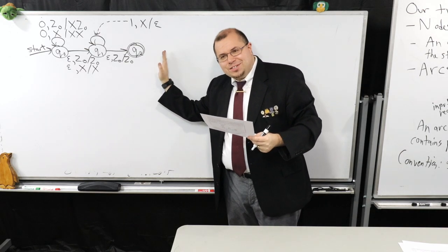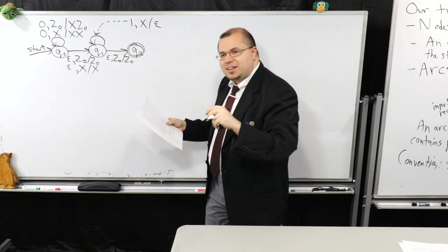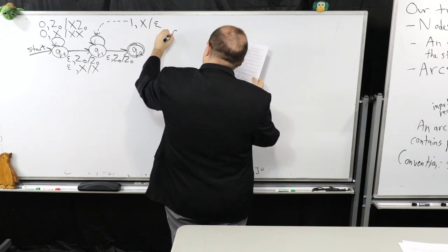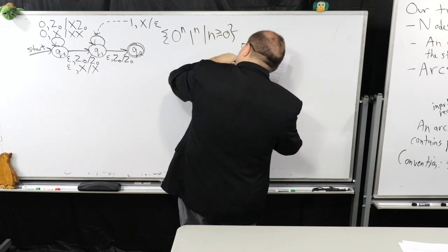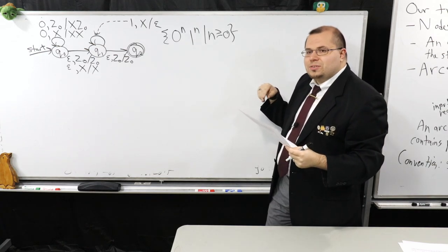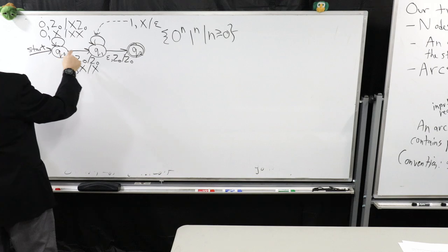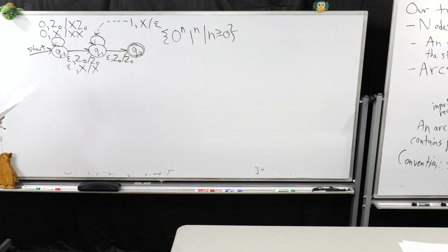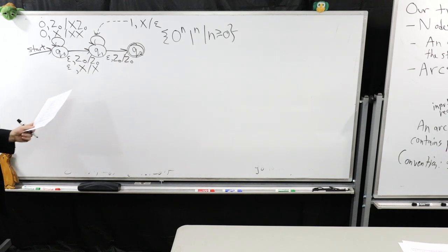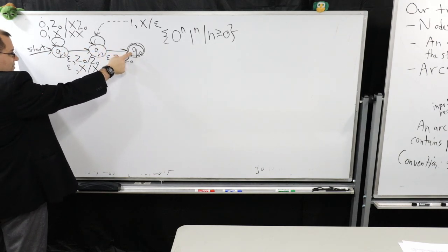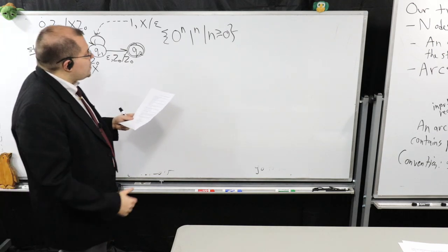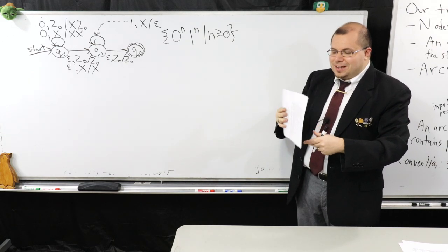This PDA recognizes the language zero-to-the-n, one-to-the-n, where n is greater than or equal to zero. If you need to convince yourself, remember it could be the case that there are no zeros or ones. We need these epsilon moves to get from Q0 to Q1, then from Q1 to Q2, so the empty string is accepted. The epsilon moves ensure that when we're done reading zeros — or if we don't read any — we can still reach the final state.